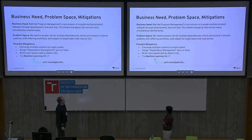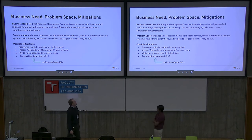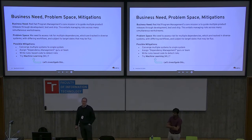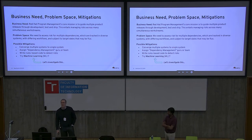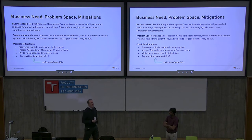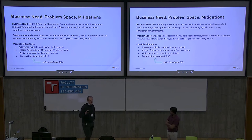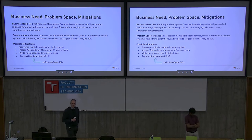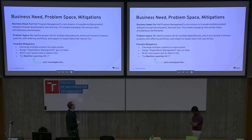I'm with the program management team at Red Hat, and our primary mission is to guide multiple product releases through development and tests and through ship. This means there are a lot of dependencies across a lot of diverse systems. Frequently those systems work differently and they don't talk to each other. The problem we have is how to anticipate and manage risk for heterogeneous systems. That's complicated by the fact that most of the target dates in play are constantly in flux, so we have to do ongoing risk analysis against a set of changing target dates.